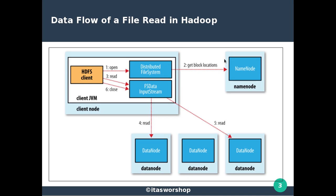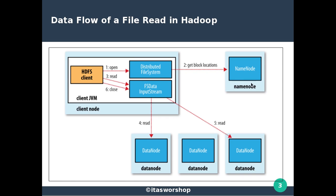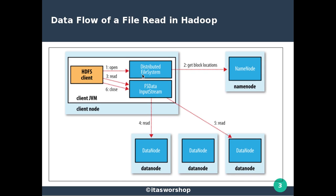The client calls open() on DistributedFileSystem, and DistributedFileSystem then contacts the NameNode using RPC to determine the location of the first few blocks in the file. For each block, the NameNode returns the addresses of the DataNodes that have a copy of that block. Then DistributedFileSystem returns an FSDataInputStream to the client for it to read data from.